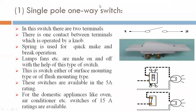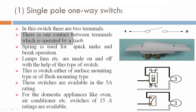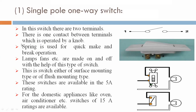Single pole one-way switch: In this switch, there are two terminals — terminal one and terminal two, as seen in the figure. There is one contact between terminals, which is operated by a knob. Spring is used for quick make and break operation.